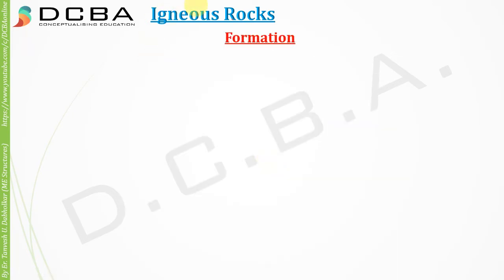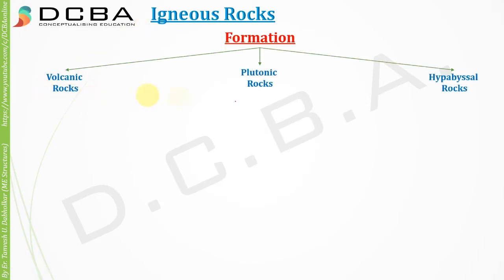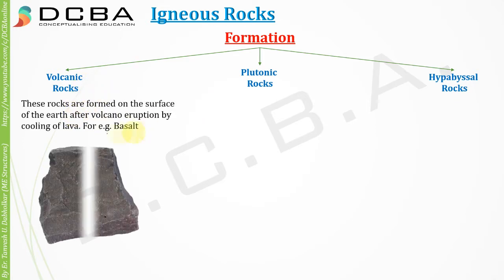Igneous rocks are categorized into three types based on formation. First is volcanic rocks, second is plutonic rocks, and third is hypabyssal rocks. Volcanic rocks are those which are formed on the outer surface of the earth. The example is basalt, and their texture is very fine-grained.